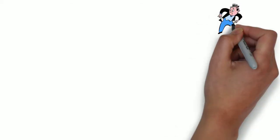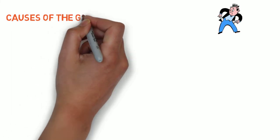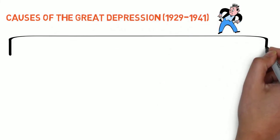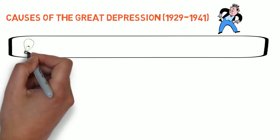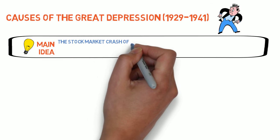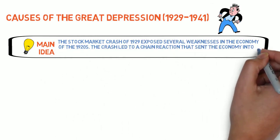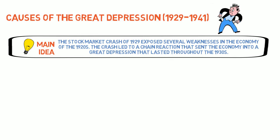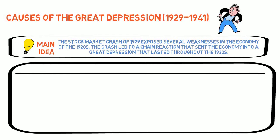Throughout the 1930s, the United States suffered the longest and deepest economic depression in its history. Many people point to the stock market crash of October 1929 as the cause of the depression. But there was not one single cause of the Great Depression. Instead, it was a combination of several weaknesses in the economy of the 1920s that created a chain reaction and vicious economic cycle. It is more accurate to say that the crash triggered the depression.